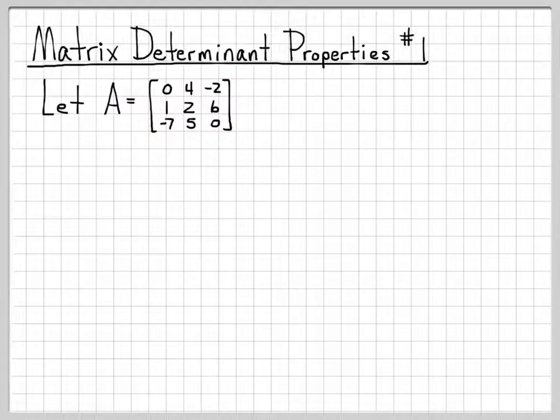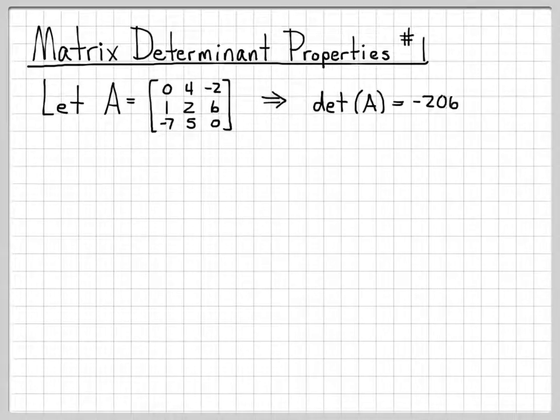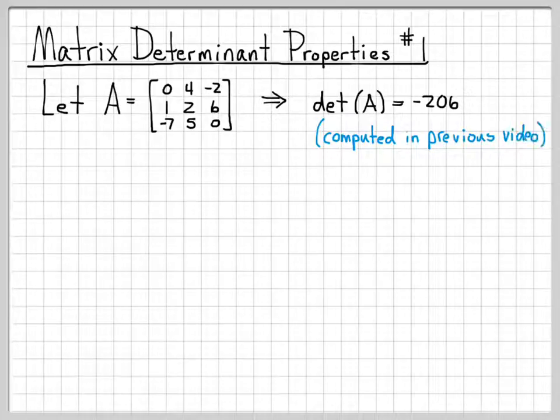Matrix A is: 0, 4, negative 2 in the first row; 1, 2, 6 in the second row; negative 7, 5, 0 in the third row. And we know from the previous video that the determinant of A is equal to negative 206.